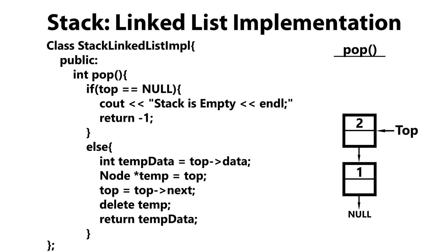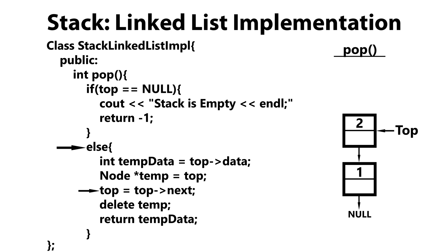Now let's move on to the pop method. The first thing we do is check whether the stack is empty. If top is equal to null, we print that the stack is empty and return minus one. Otherwise, we save the data from the top of the stack, then create a temporary pointer to the top. We advance top to top's next, then delete temp — the previous top node — and finally return the saved data.